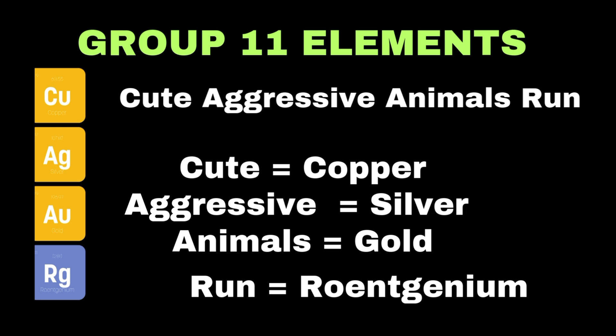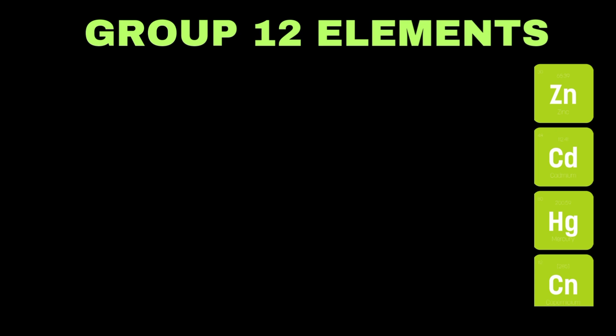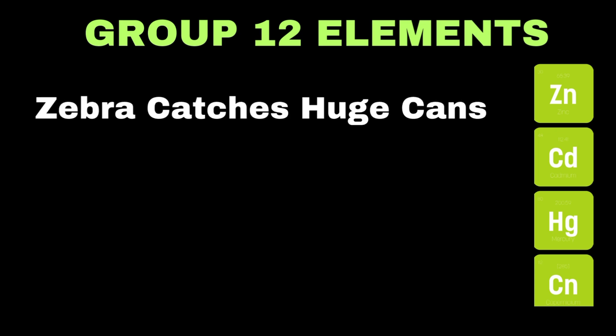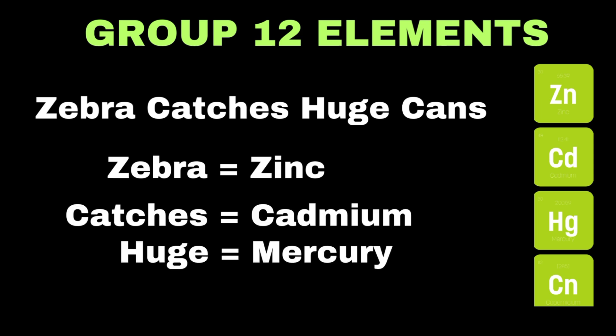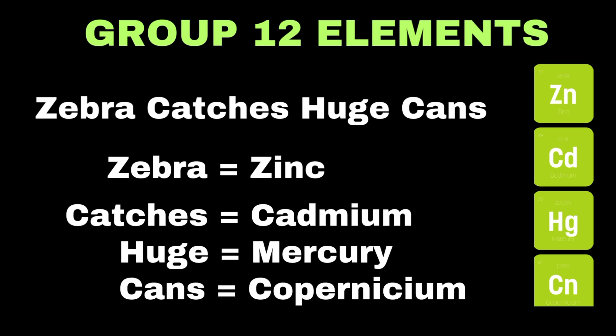Moving towards the last group in the periodic table, which is group 12, its mnemonic is: 'Zebra catches huge cans.' Here 'zebra' is used for zinc, 'catches' is used for cadmium, 'huge' denotes mercury (symbol Hg), and 'cans' represents copernicium.